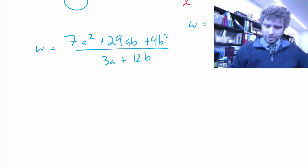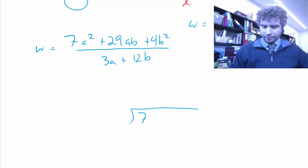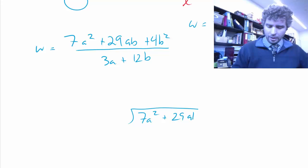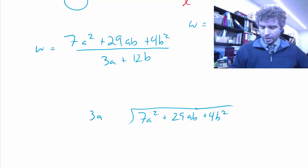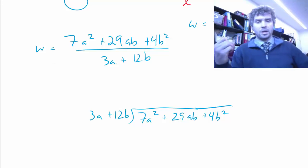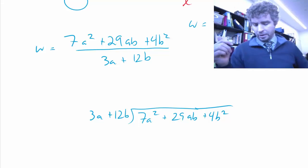I think there's a few ways to do this, but I'm going to do it by using long division. So, 7a squared goes in here plus 29ab plus 4b squared under my division sign here, and then I'm going to divide by 3a plus 12b. This is just a way to write it out so that you can do it methodically and find the answer.